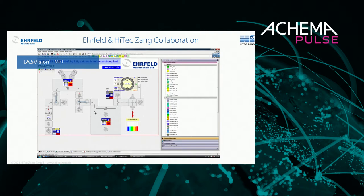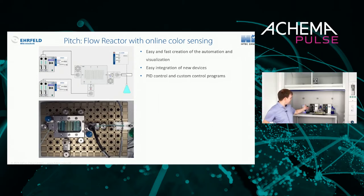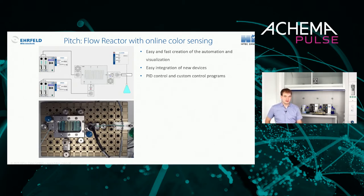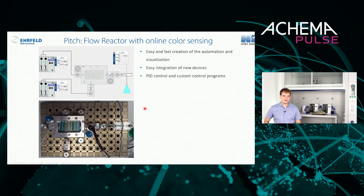On the next slide you can see a simple demo setup — the same setup physically behind me, which I also presented in a pitch video this morning. What we have here are two zero syringe pumps made by HiTec Zang, which pump food coloring through an Ehrfeld flow plate reactor. Additional modules measure temperature at one of the inlets and pressure at the outlet, and there is a color sensor at the end. This allows you to control the color values as a demonstration.